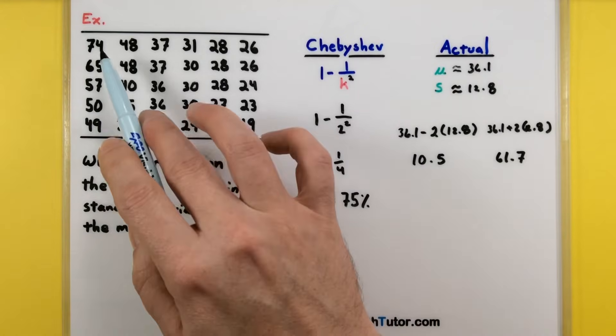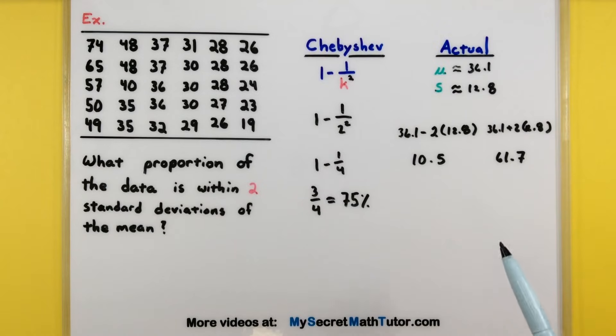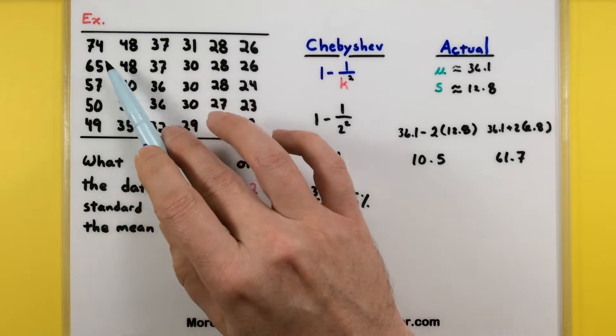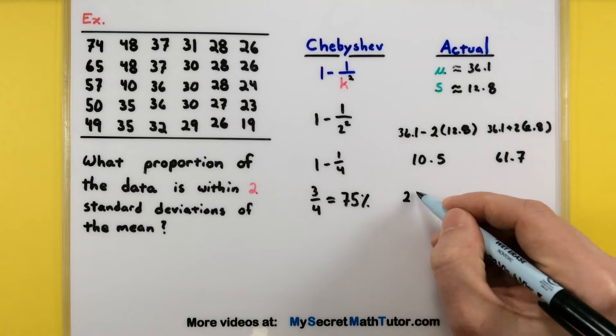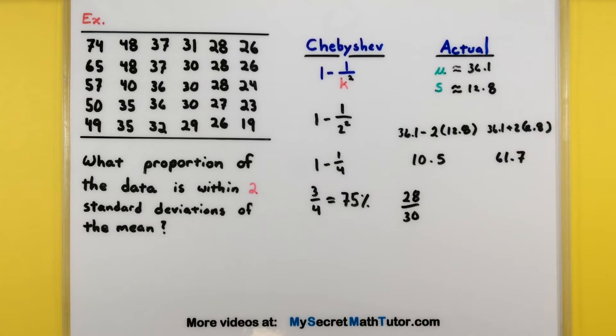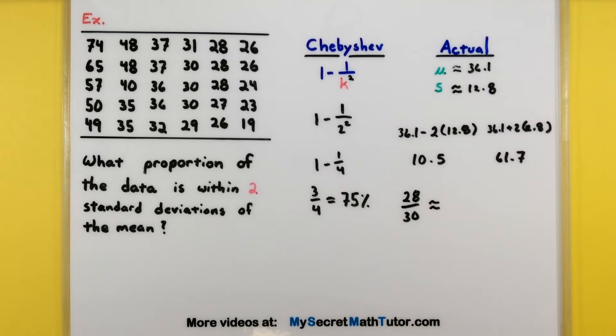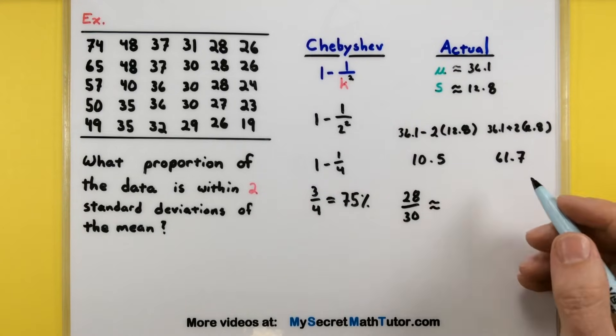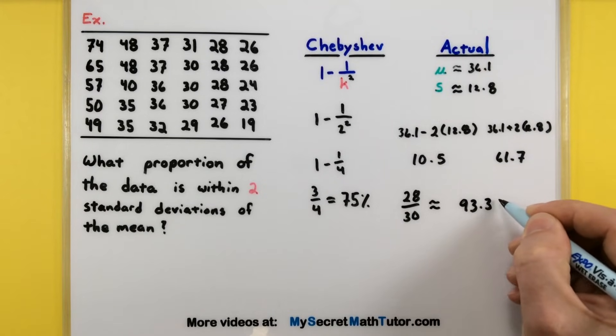So this is a lower and an upper range for where I can expect my data. And if we're looking at the data, it's all organized from the largest all the way down to the smallest. We can see that most of our data does fall within 10.5 up to 61.7. There's only two values up here in the corner which do not fall in that range. So I can say that 28 out of 30 fall within two standard deviations. All right, reducing that fraction, getting a percent, that turns out to be 93.3 percent.